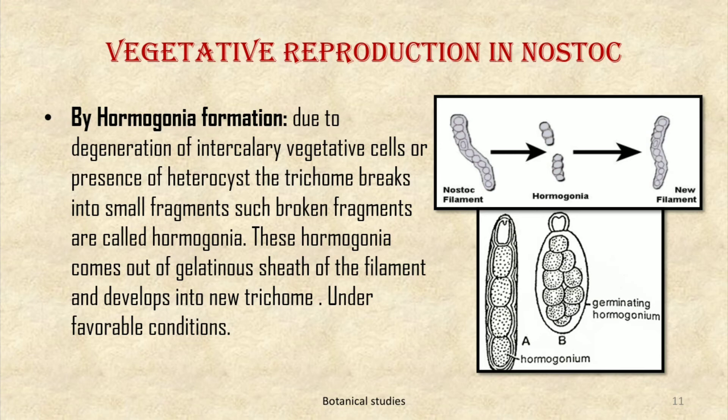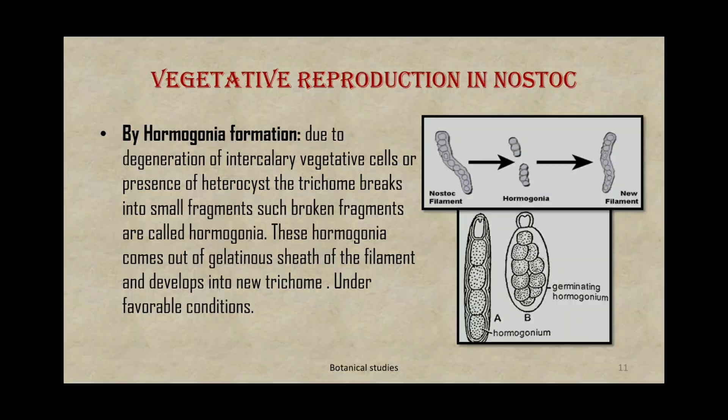Vegetative reproduction in Nostoc by hormogonia formation: due to degeneration of intercalary vegetative cells or presence of heterocysts, the trichome breaks into small fragments. Such broken fragments are called hormogonia. These hormogonia come out of the gelatinous sheath of the filament and develop into new trichomes under favorable conditions.